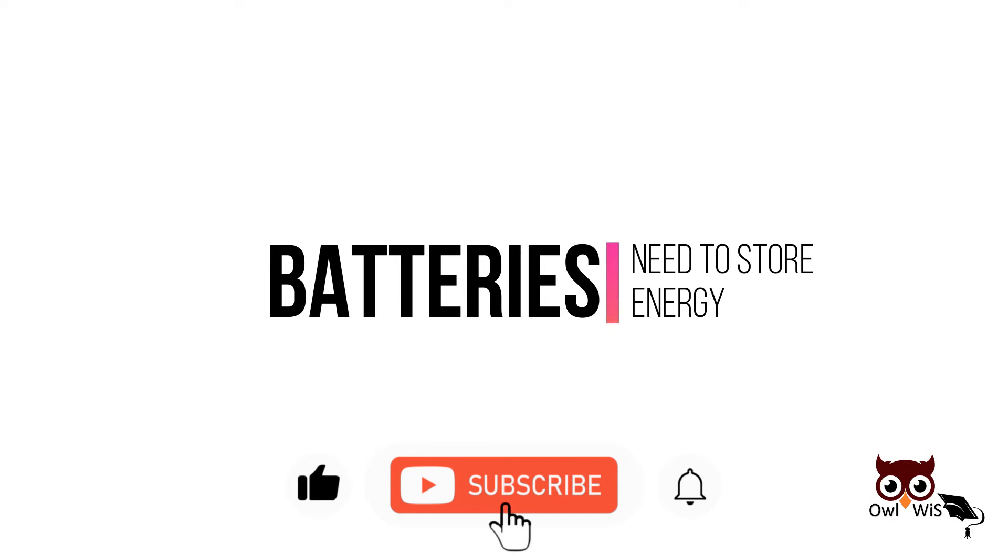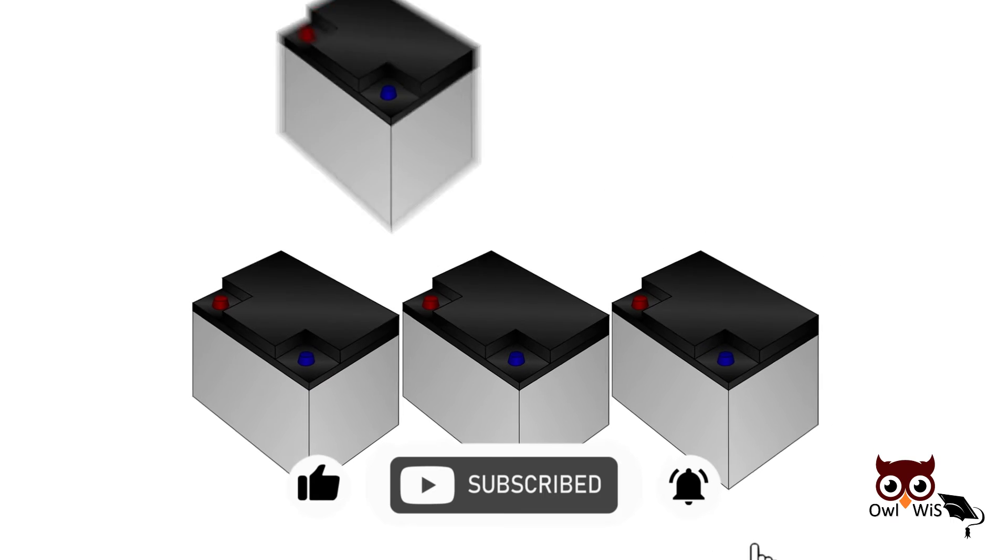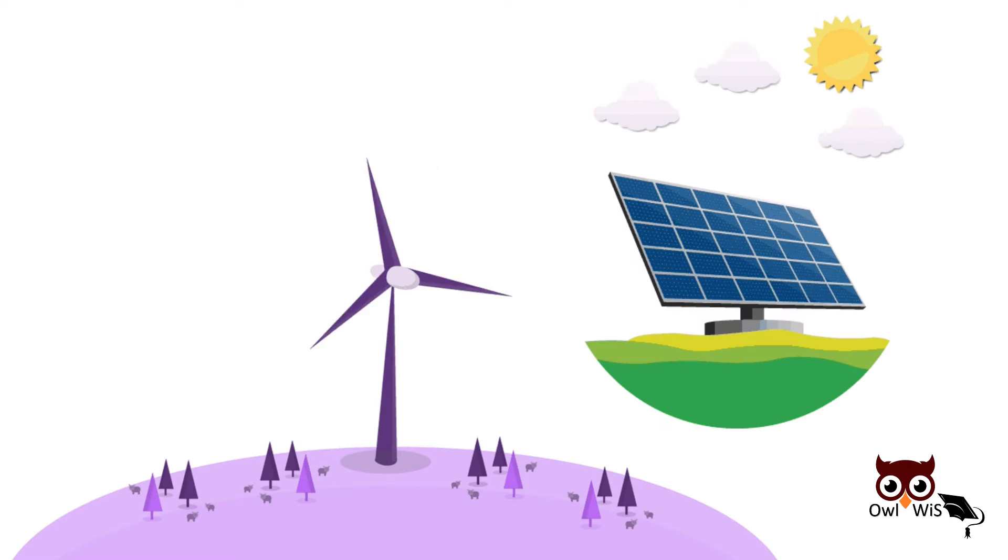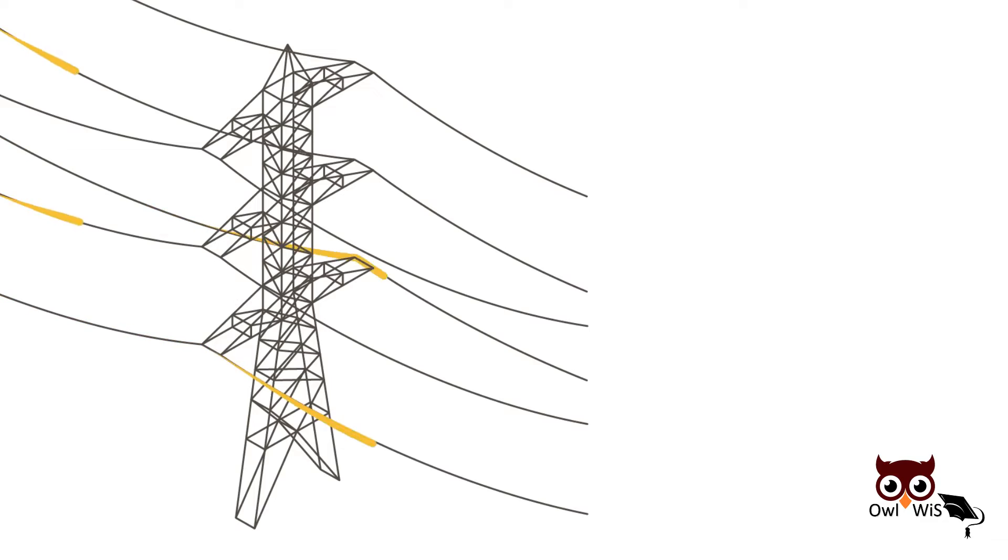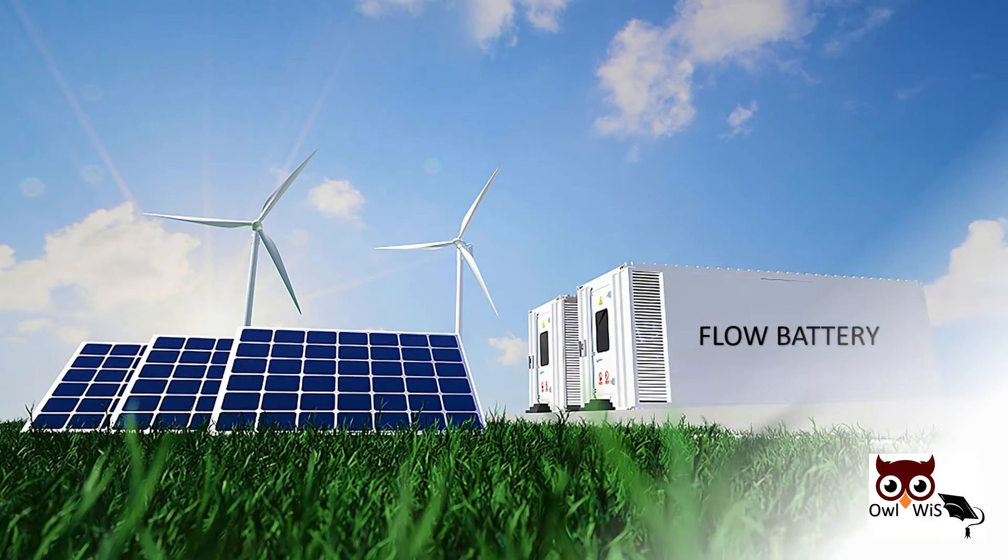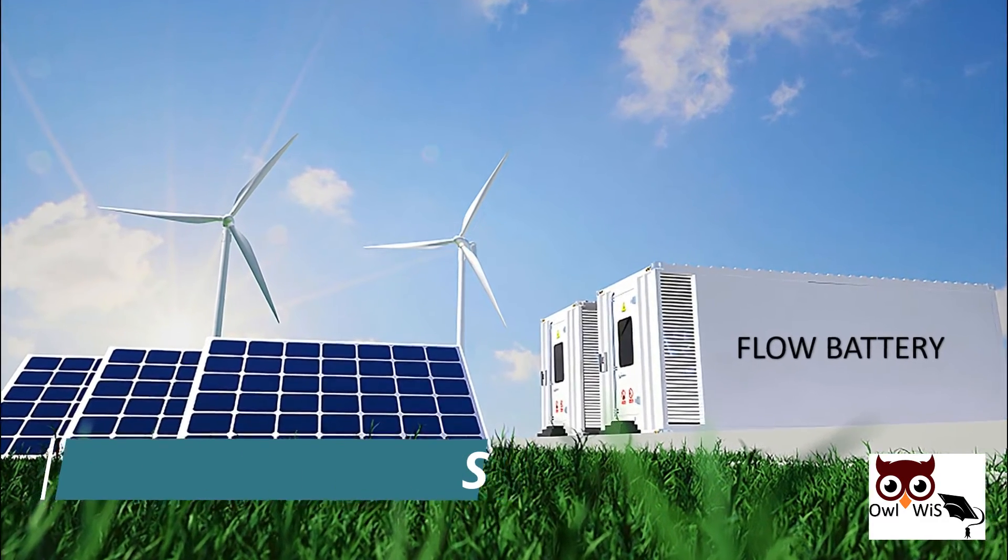Batteries will need to store energy on a big scale in order to make these intermittent energy sources a regular part of the grid without producing instability. Flow batteries are a promising technology for this.